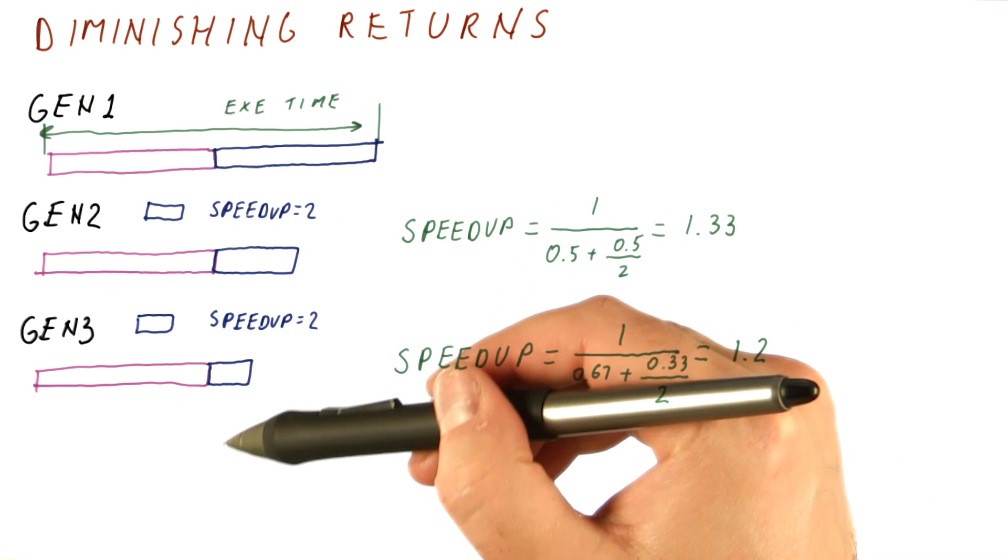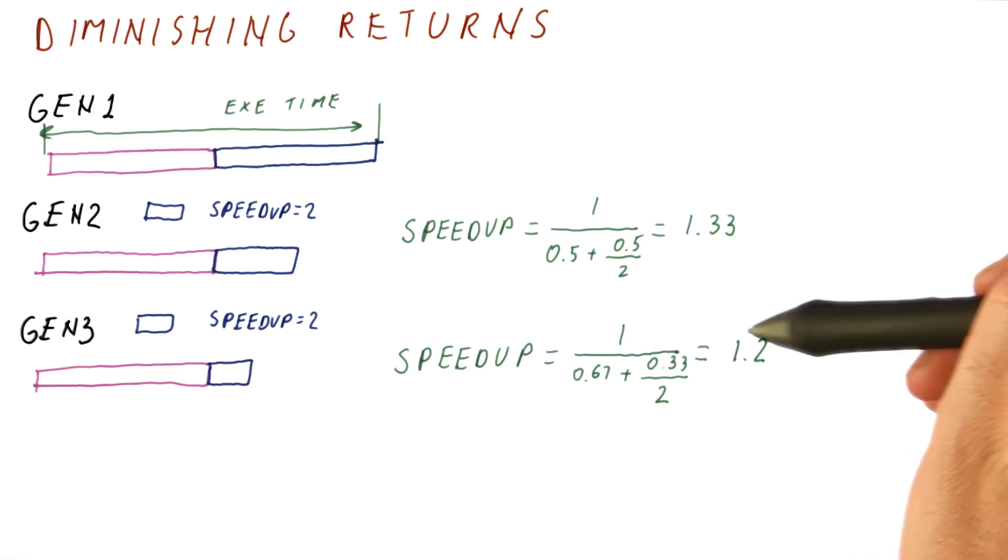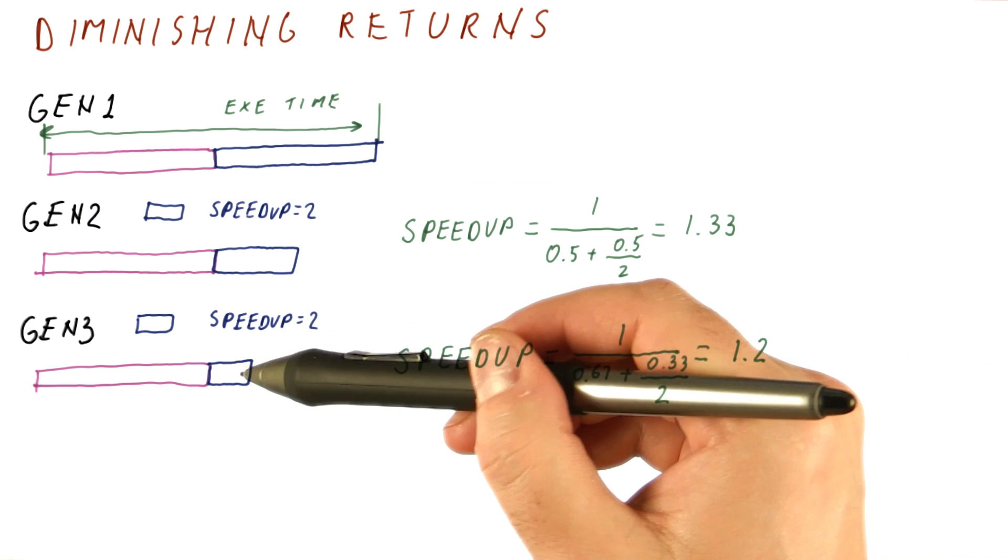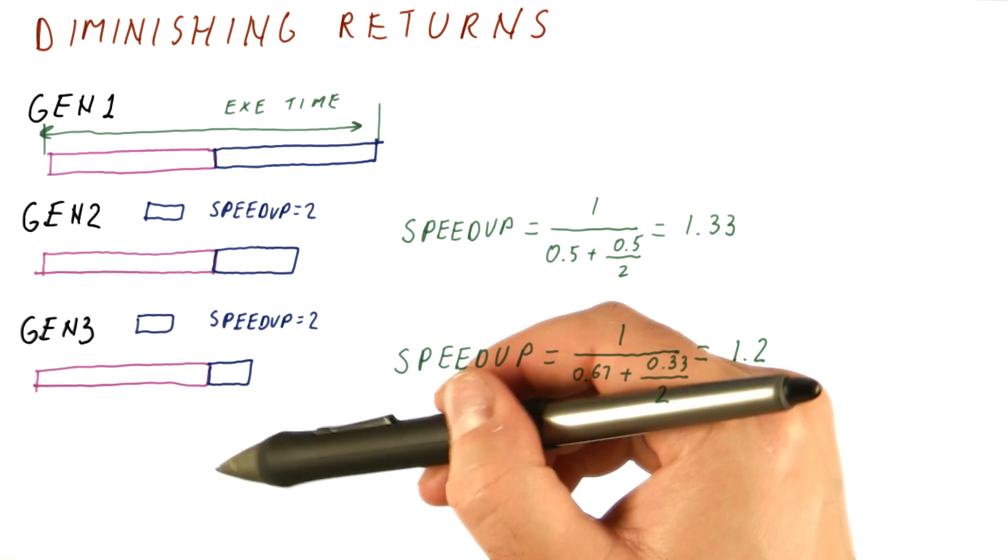If we keep improving the blue part over the generations, eventually we will get to almost no speedup. Why? Because we are improving what amounts to less and less of the execution time.